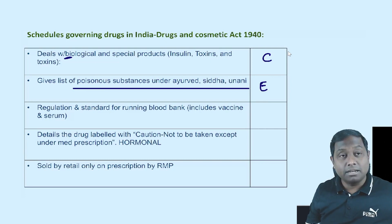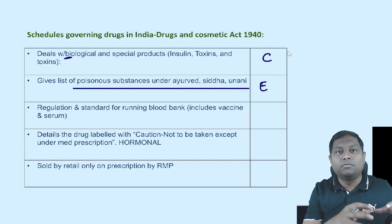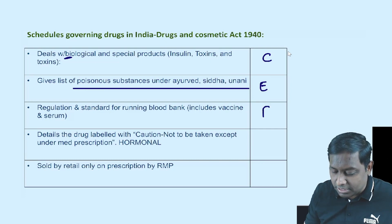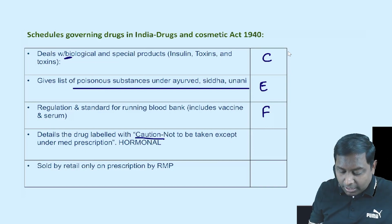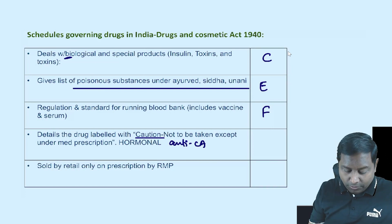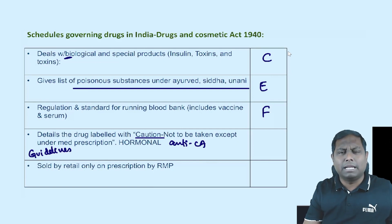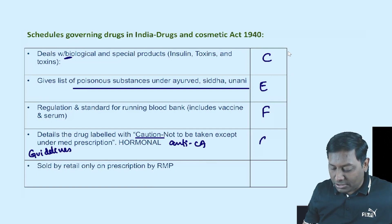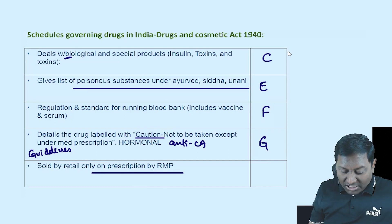Schedule E covers standards and regulations for running a blood bank — everything is frozen there. Schedule F details drugs labeled with caution, including hormonal and anti-cancer drugs, providing a guideline that they should be given under medical supervision.